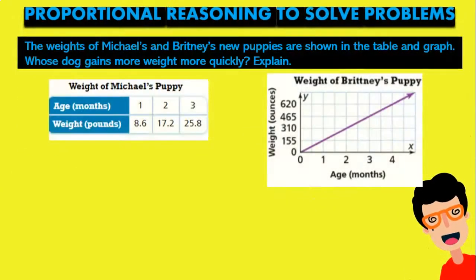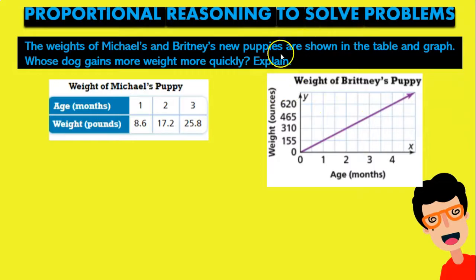The situation we have here is: the weight of Michael's and Britney's new puppies are shown in the table and graph. Whose dog gains more weight more quickly — and explain. In this case we have Michael's puppy shown in a table and Britney's puppy shown in a graph. We're going to have to compare the information shown in both the graph and the table to see which dog gains more weight more quickly.